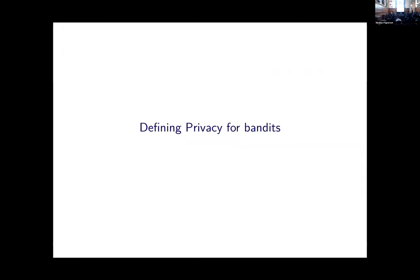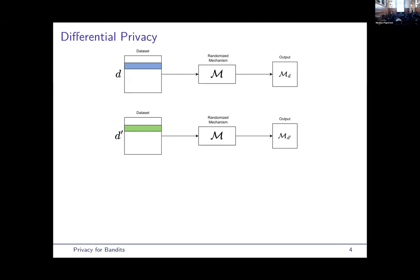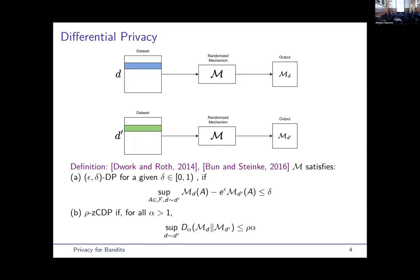So, now I'll try to define exactly the privacy constraints for bandits, and as a framework, we will adopt differential privacy, as you've seen in this presentation before. I will just remind the definition for fixing notation. So, differential privacy is a constraint on randomized mechanisms, and the mechanism satisfies this constraint if, by changing one element in the input, the output distributions MD and MD prime are close enough. And the two notions of closeness that we're going to consider are epsilon delta and zero-concentrated DP.